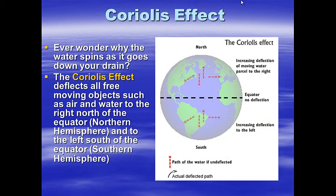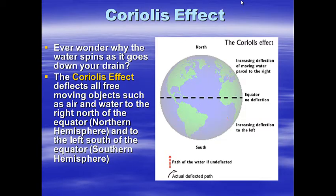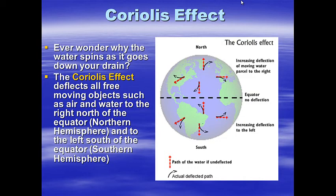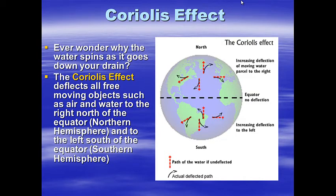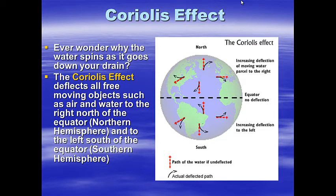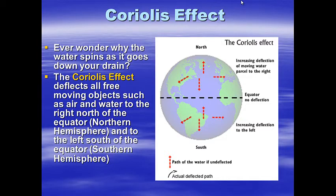The Coriolis effect — what is that? Have you ever wondered why water spins as it goes down your drain? The Coriolis effect deflects all free-moving objects, such as air and water, to the right north of the equator in the northern hemisphere, and to the left south of the equator in the southern hemisphere.